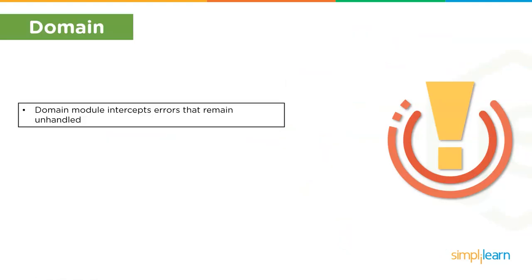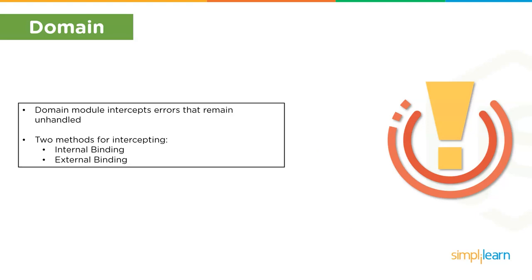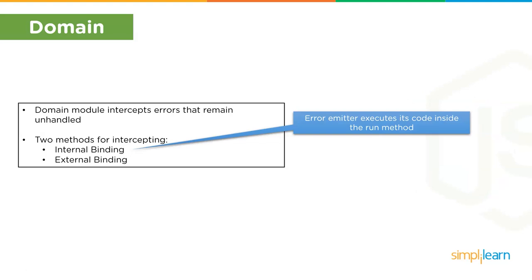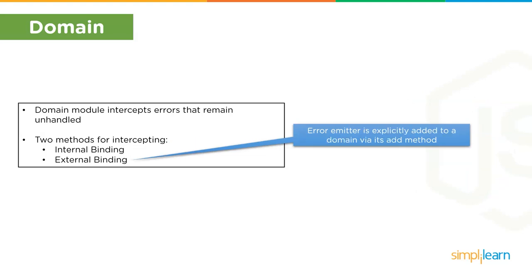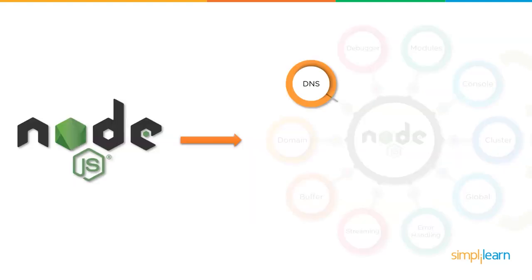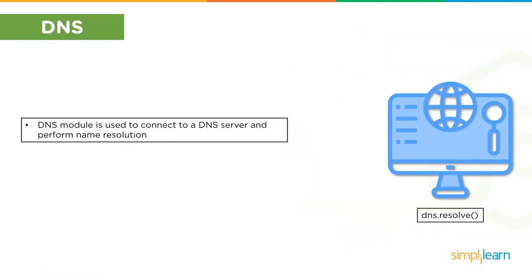Next up we have domain. Domains provide a way to handle different I/O operations as a single group. The domain module intercepts errors that remain unhandled. There are two types of methods for intercepting these errors: internal binding, where the error emitter executes its code inside the error method, and external binding, where the error emitter is explicitly added to a domain via its add() method.